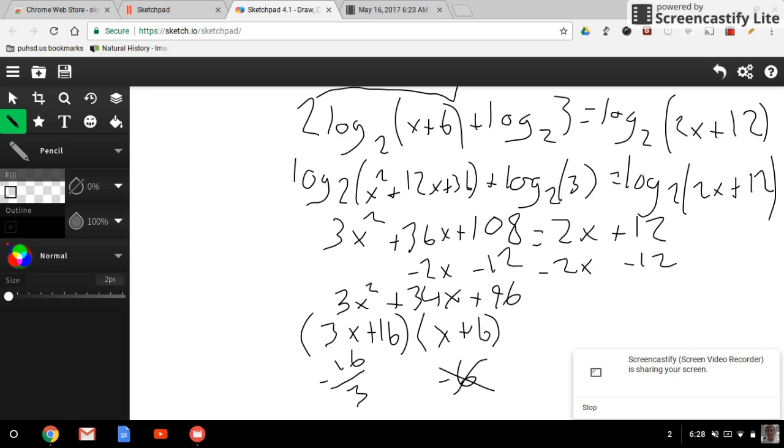The first step to solving 2 log base 2 of x plus 6 plus log base 2 of 3 equals log base 2 of 2x plus 12 is distributing this 2. The most common way of doing it is since it's applied to log base 2 of x plus 6, just bringing it back and letting it square x plus 6.